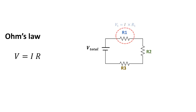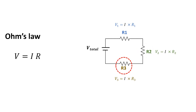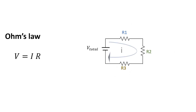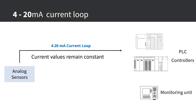According to Ohm's law, voltage equals current times resistance. If I measure the voltage across the first resistor, voltage equals current times the value of the first resistor. The same applies for the second and third resistors — meaning there is a voltage drop across each load. However, the current is the same anywhere in the loop, and this is the basis of the industrial 4 to 20 milliamps current loop circuit: the current values remain constant and don't drop or change over long connections the way voltage values do.